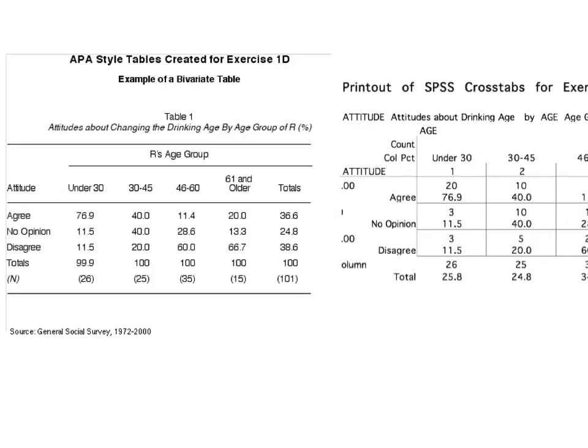Here are the two items side by side. If you look at, for example, the respondents' age group by their attitude — if you see in that first column in that first cell the 76.9%, and then you look at the APA style table, you see that is where you put the 76.9%. It's just that easy.